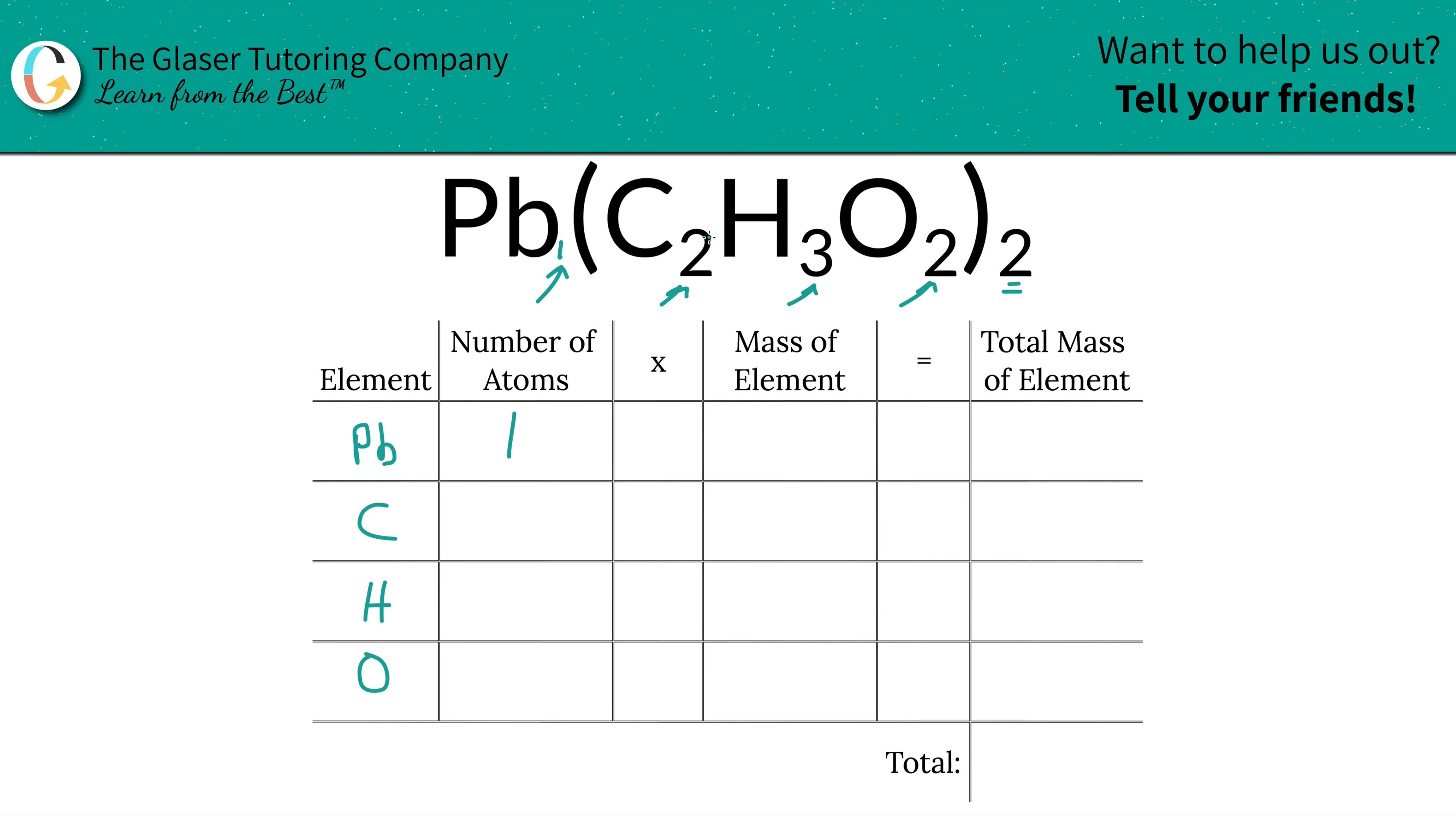Next we take a look at the carbon. Now carbon, there are two carbons here, but there is also an outer subscript to this entire polyatomic anion called the acetate ion. And in order to find the total carbon, we take the inner subscript and multiply it by that outer subscript, so that'd be four carbons.